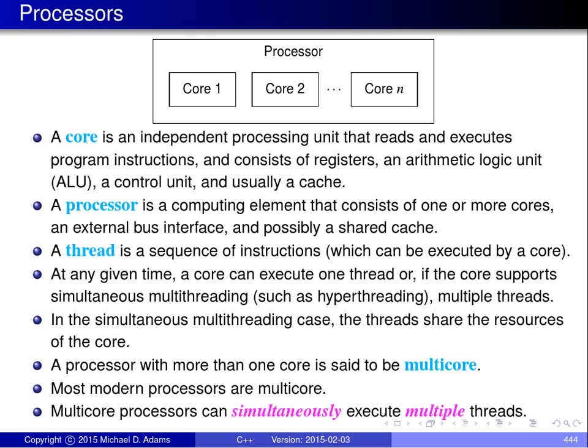A processor core consists of some registers, an arithmetic logic unit which performs computation such as addition, subtraction, multiplication, and division, and a control unit which synchronizes all the activities of the core. On any modern core there'll also be a cache of some sort, which is important for performance reasons. I'll have more to say about caches in a moment.